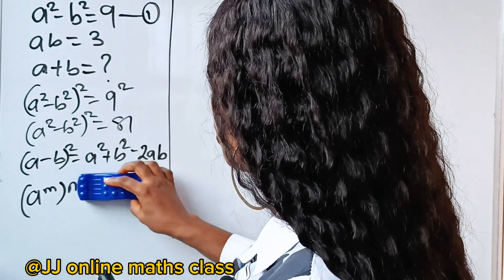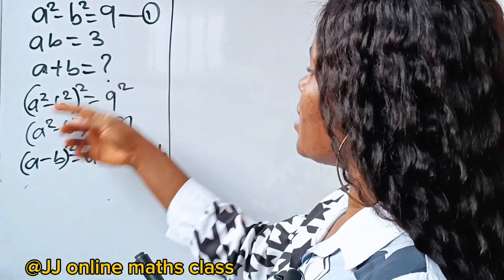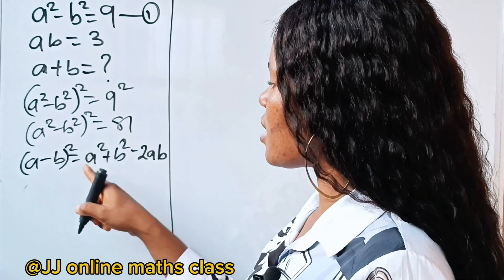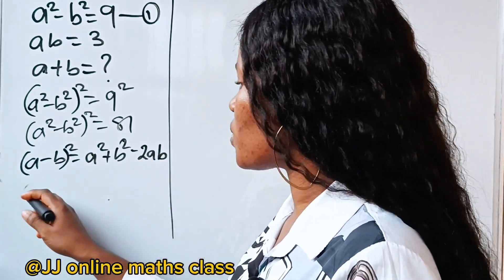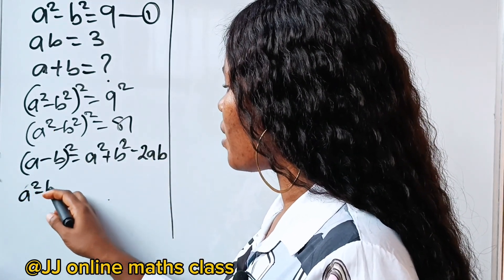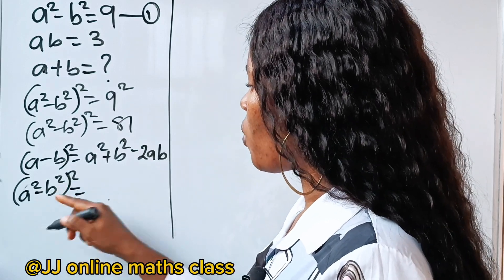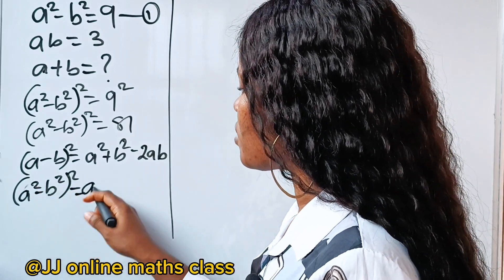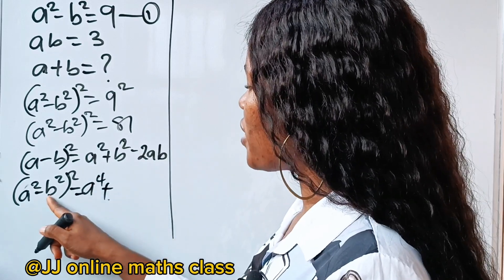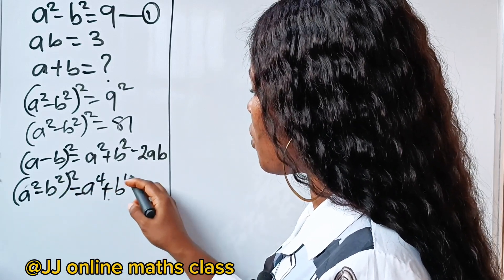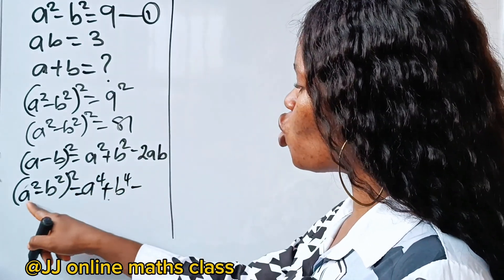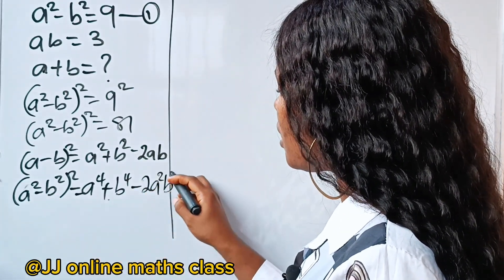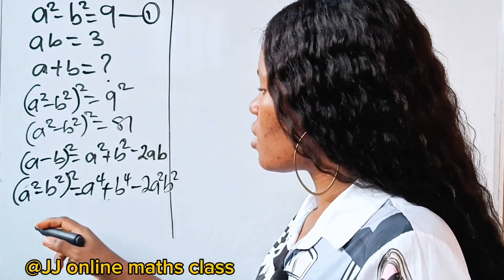So if we should use this here and relate it to this, then this can be expressed as: a squared minus b squared, all squared, will be equal to a squared squared — that is a to the power of 4 — plus b to the power of 4, minus 2 times a squared b squared.